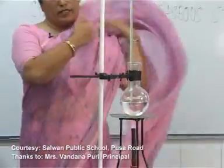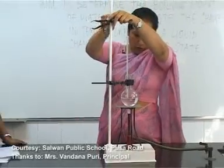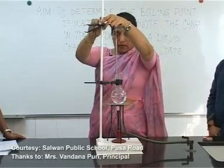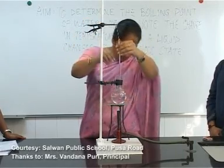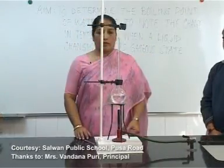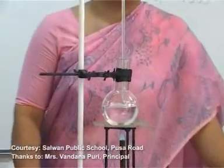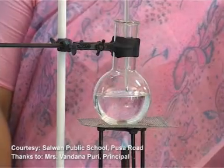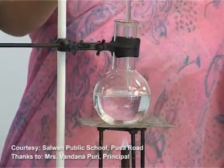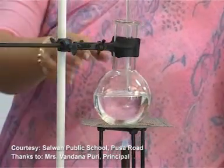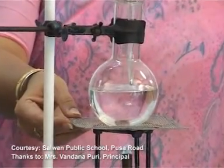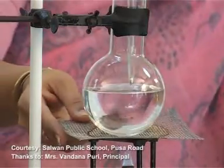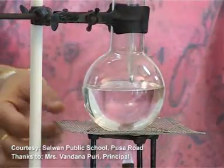Let us see a few precautions for this experiment. Certain precautions are to be followed. One is the thermometer should not touch the walls of the glass flask. Second, we have to use a wire gauge. We should not heat directly on the flame — we have to use a wire gauge.